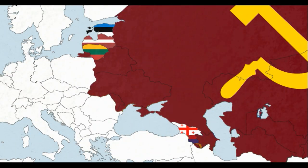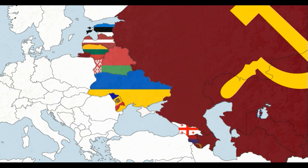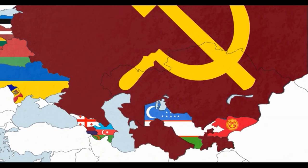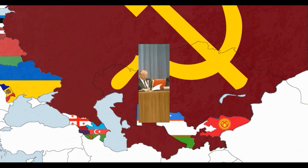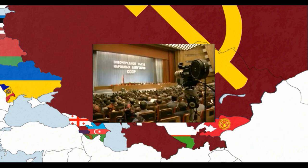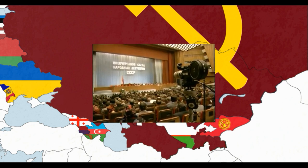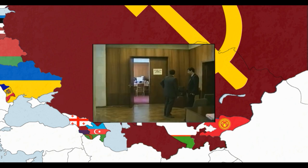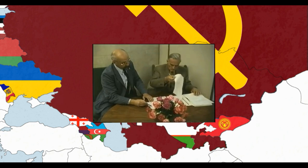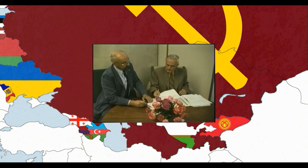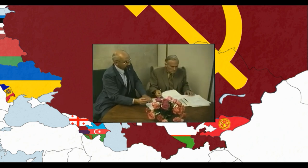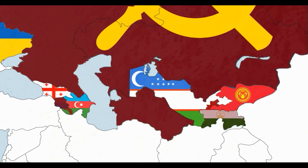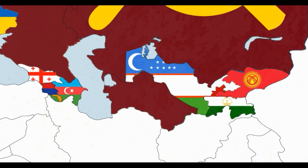Declarations of independence quickly followed in Ukraine, Belarus, Moldova, Azerbaijan, Kyrgyzstan and Uzbekistan. The State Council of the Soviet Union was created on September 5th to replace the Congress of People's Deputies, consisting of Gorbachev and the leaders of each republic. The next day, the State Council voted to recognise the independence of the three Baltic states. The next month, Tajikistan and Armenia declared independence, and in October, Turkmenistan followed suit.